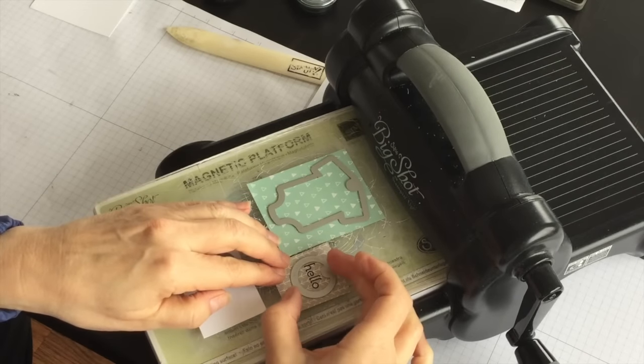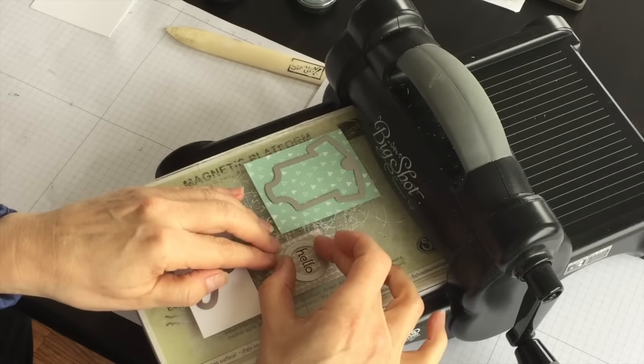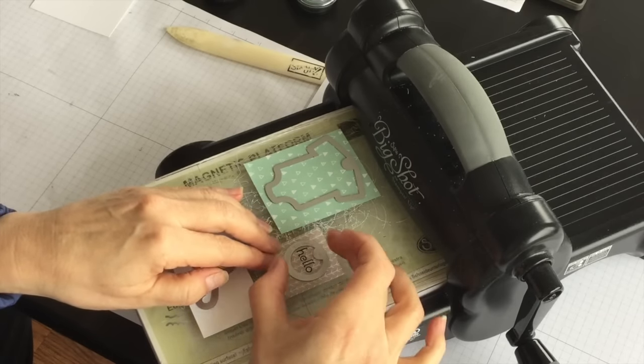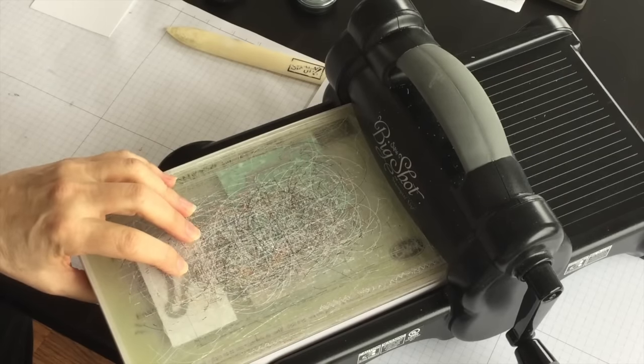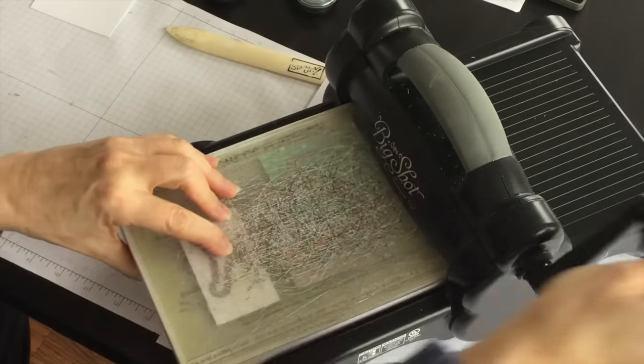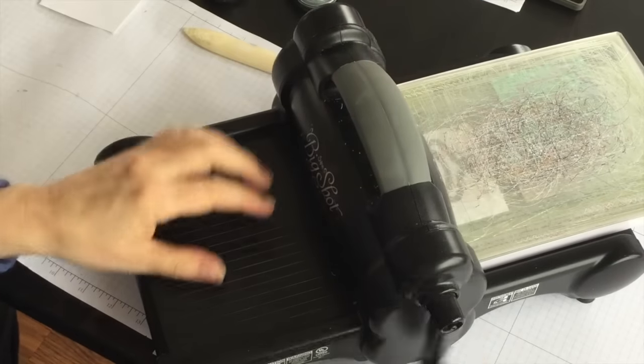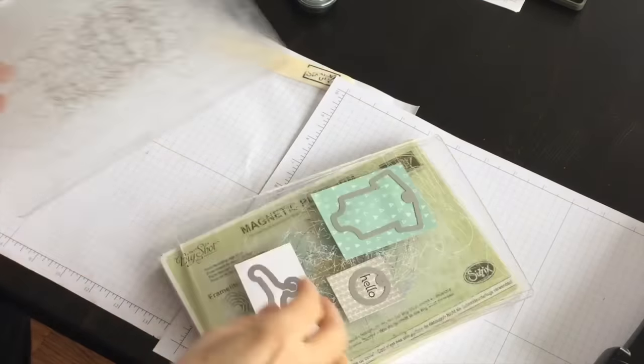So let's bring the Big Shot in a little bit closer to me. Okay, let's move this over a little bit. Sometimes the magnetic platform pulls the framelit and I want it to look good. All right, so I'm going to put the top standard cutting pad on. So I have the magnetic platform, bottom standard cutting pad, I've got my cardstock and dies, top standard cutting pad.